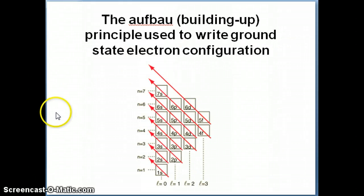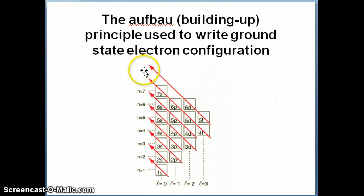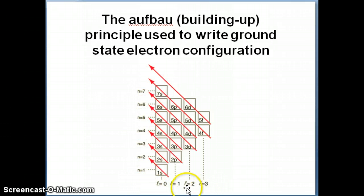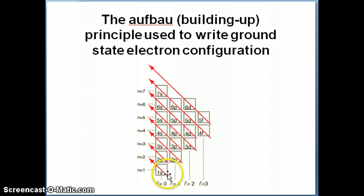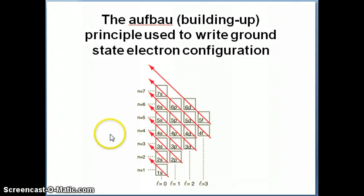There is a mnemonic device to remember how this orbital order goes. You draw a diagram with the y-axis being the principal quantum number and the x-axis being the angular momentum quantum number, listing the s, p, d, and f orbitals. Drawing diagonal arrows going from right to left gives you the correct filling order, helping you determine which orbital follows which. This is something you want to memorize — on exams or quizzes, quickly write it out so you don't forget the order.